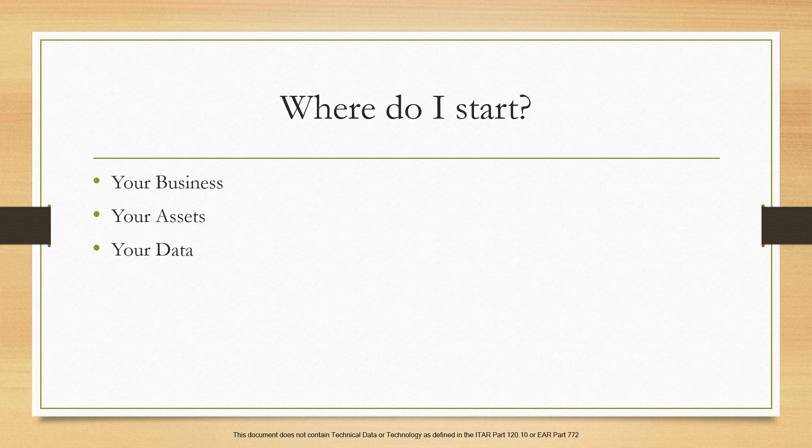And then lastly, your data: the format of the data and how it is accessed. How does the CUI enter your organization and in what format? It's important to have a data flow diagram. How many users have access to it — going back to those access control policies? Who can access CUI, where is it stored, is it shared, how do you share it, can it be accessed remotely? If you know the answers to these questions, it's definitely a head start on becoming NIST 800-171 compliant.